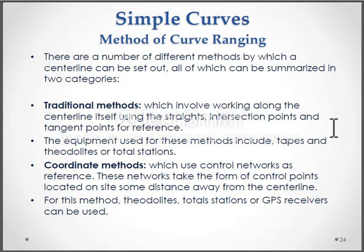The equipment used for these methods include tapes and theodolites or total stations. Second one coordinate methods which use control networks as reference. These networks take the form of control points located on site some distance away from the center line. For this method theodolites, total stations or GPS receivers can be used.